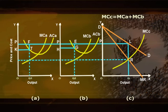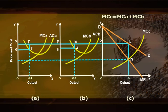With output OQ1 and cartel price OP, the profits made by firm A are equal to area PFTK. Similarly, with output OQ2 and cartel price OP, the profits made by firm B are equal to area PEGH. Total joint profits made by the cartel are maximized by equating the combined marginal cost MCC with the combined marginal revenue MR.